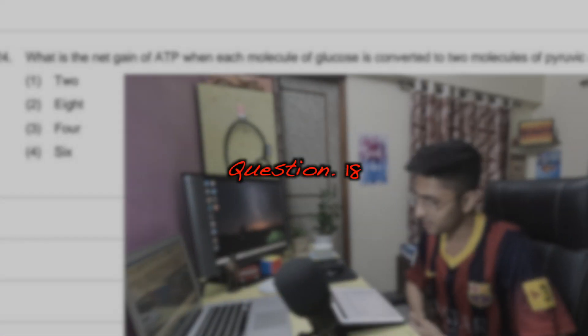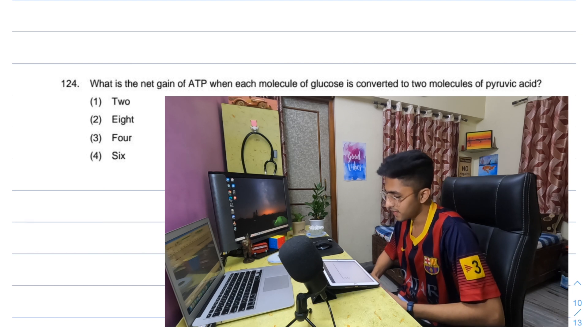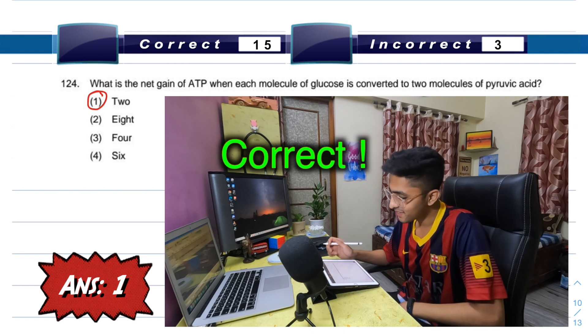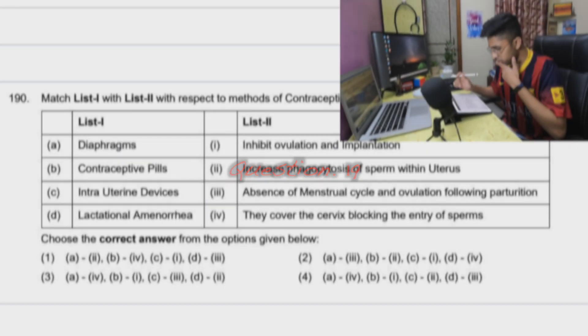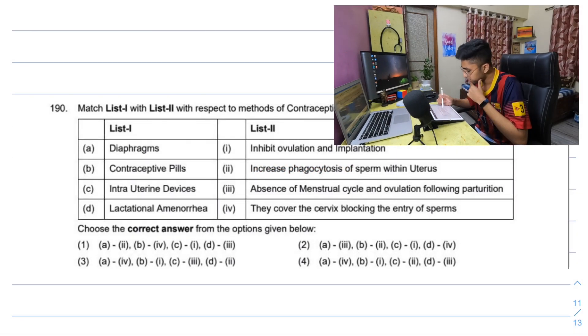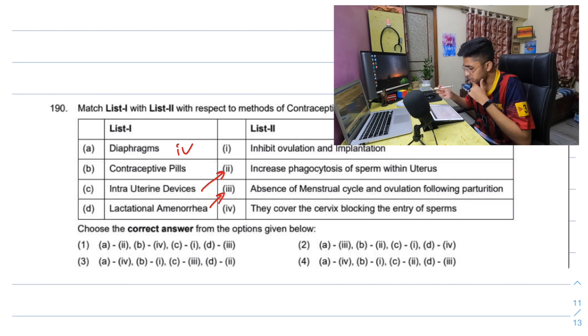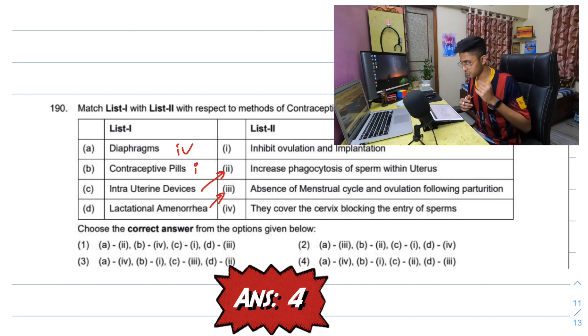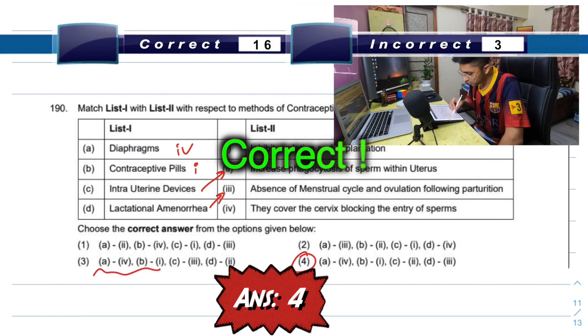The net gain of ATP when each molecule of glucose is converted to two molecules of pyruvic acid. Yes sir, I'm a med student. Two. Again another match. Contraception and respective actions. Absence of menstrual cycle and ovulation following parturition is lactational amenorrhea, so D is three. Cover the cervix blocking the entry of sperm, that's easy - diaphragm. Contraceptive pills, increase phagocytosis of sperm within the uterus - intrauterine devices like copper T. And then we have contraceptive pill, inhibit ovulation and implantation. I'm glad I know this. A med student should know this. They tried to confuse you. Again one more match the column. That's the last one guys. Biological molecules and biological function. Steroids are hormones, easy. Glycogen is storage product. Globulin from breakdown of heme. And thrombin for a biocatalyst for clotting.